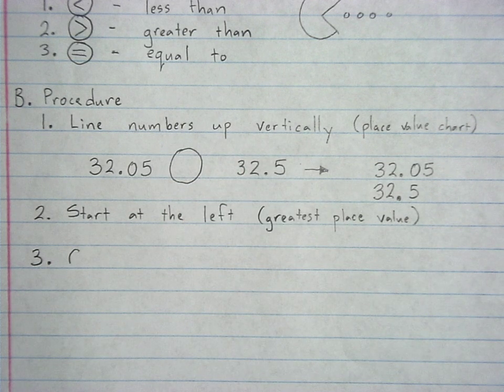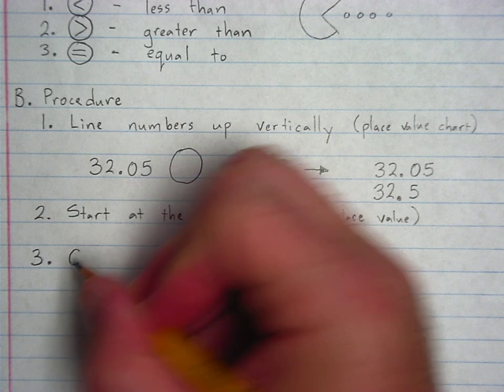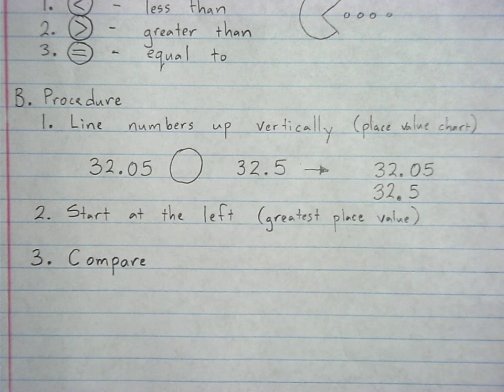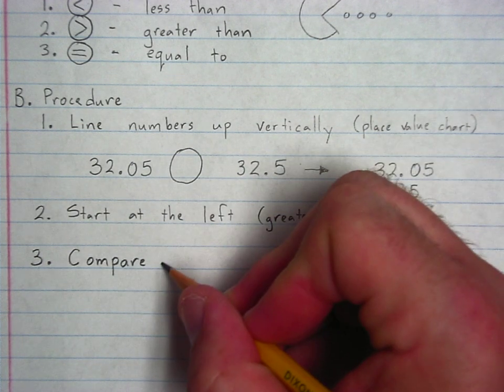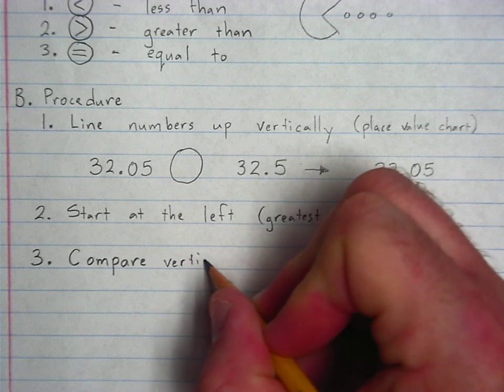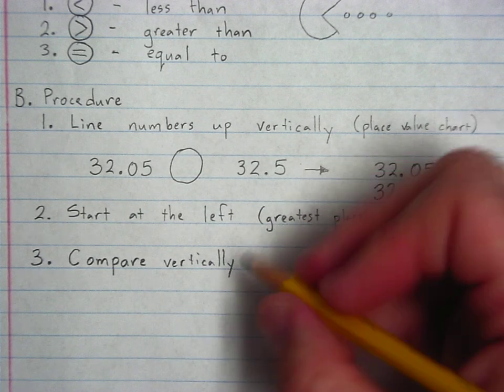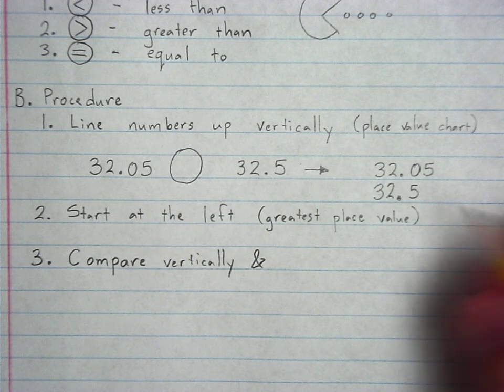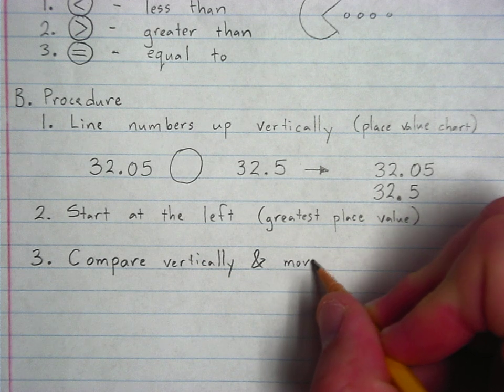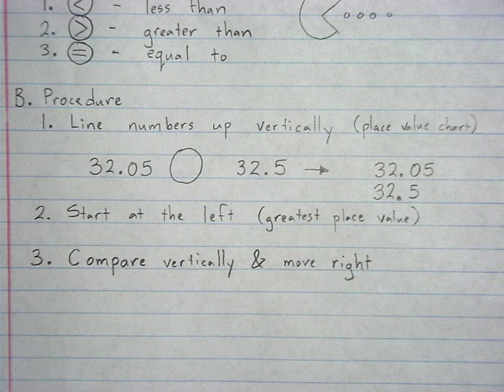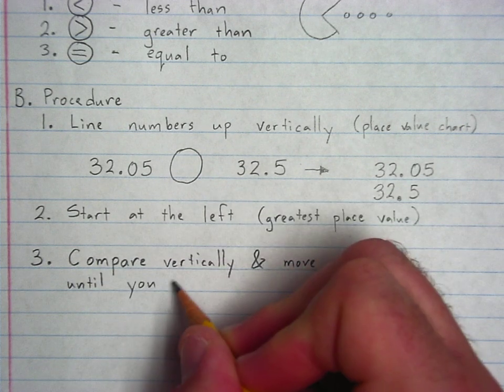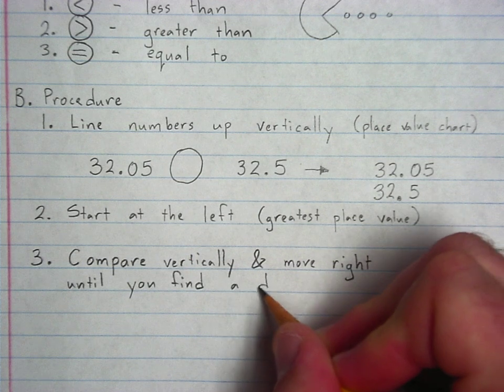Once you have the numbers written vertically, and once you've started on the far left, you are going to compare vertically. That means you're going to look up and down. Compare vertically and move right. Move right until you find a difference.